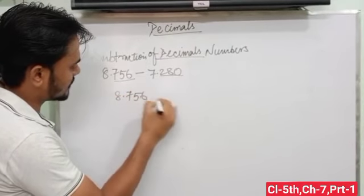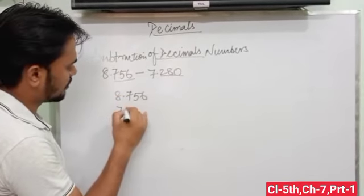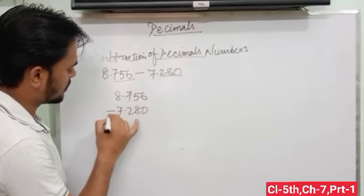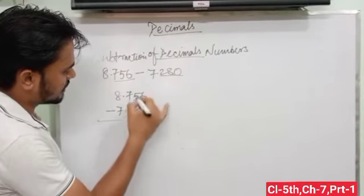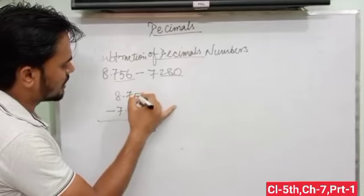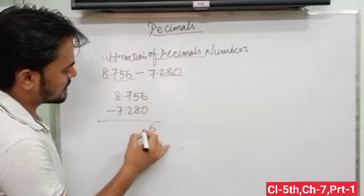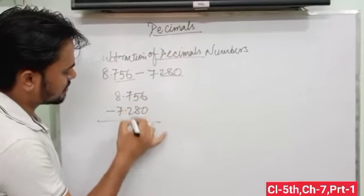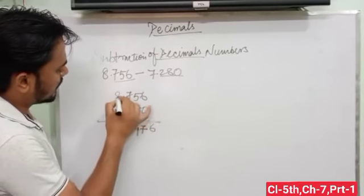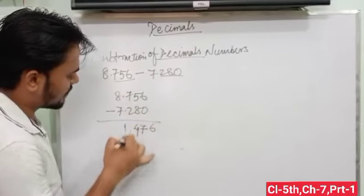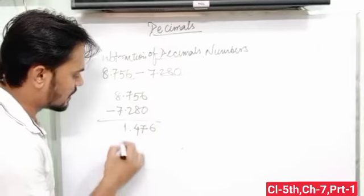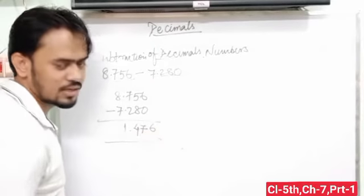8.756 minus 7.800. 6 minus 0 is 6. Take a 1. 15 minus 8 is 7. 6 minus 2 is 4. And 8 minus 7 is 1. Now our result is 0.956.